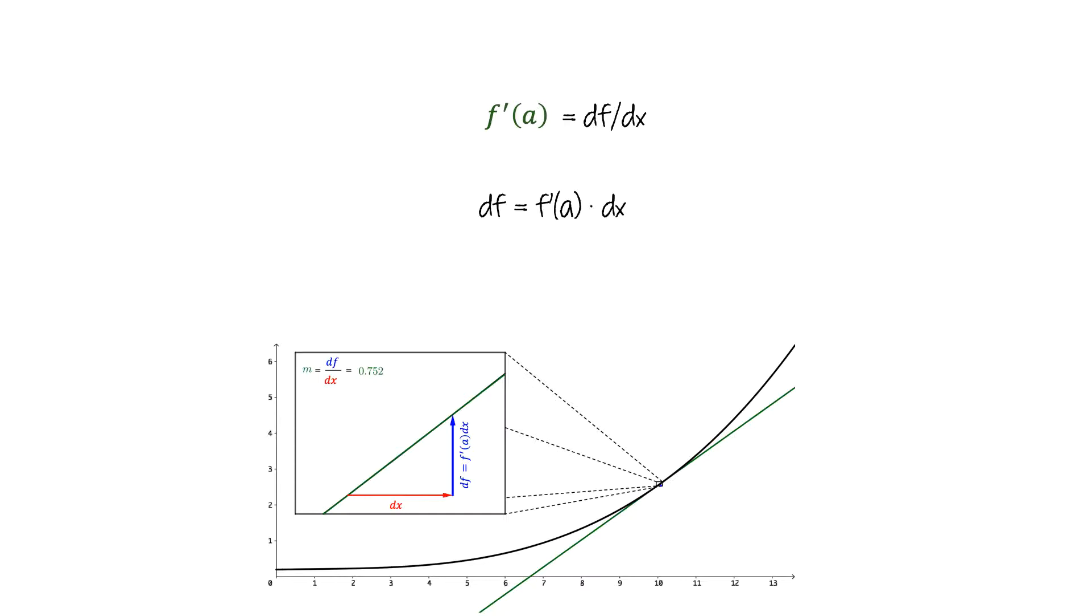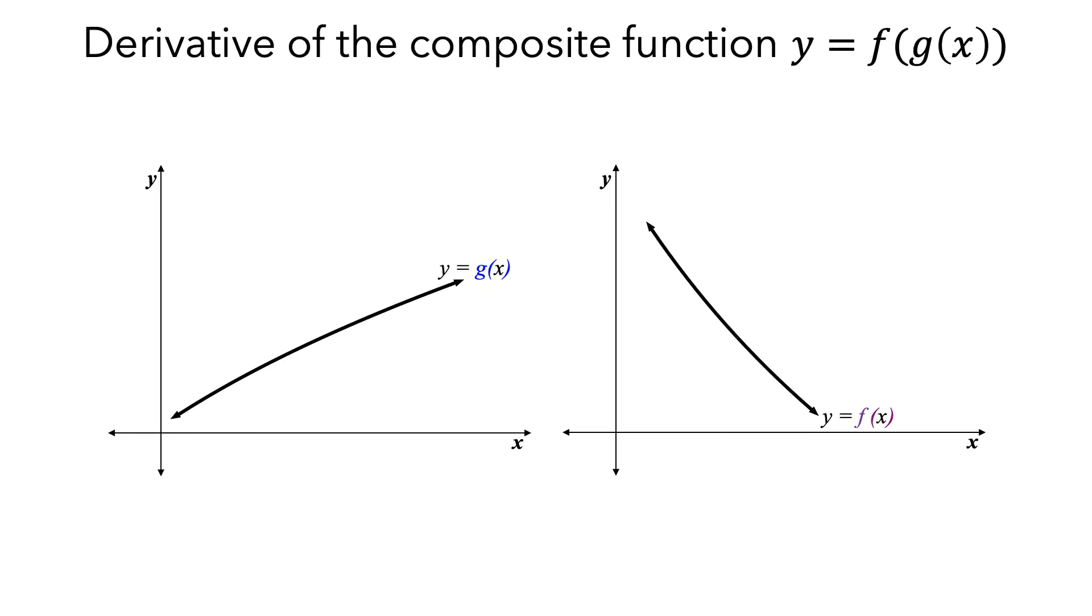Now, let's put together the idea of composing functions with the definition of the derivative to understand why the chain rule works. On the left, we have the graph of the function g, and on the right, we have the graph of the function f. We have already zoomed in a lot on these functions.